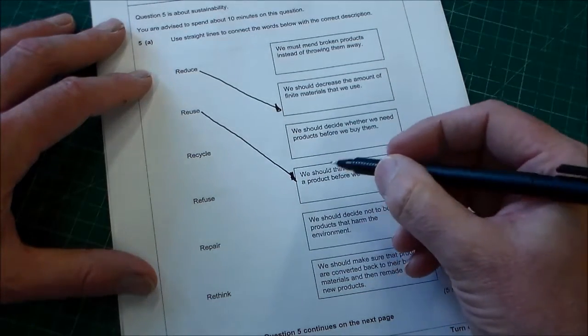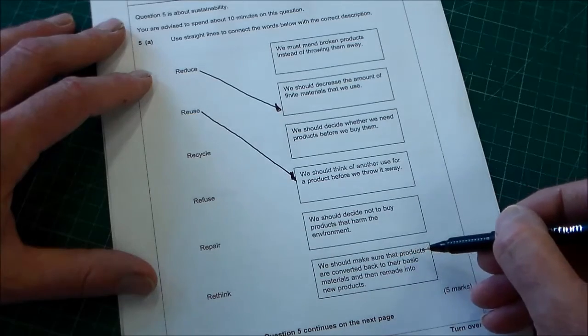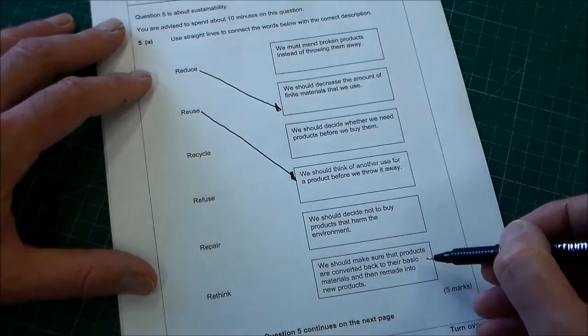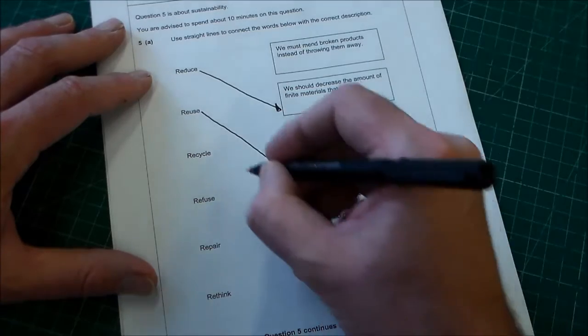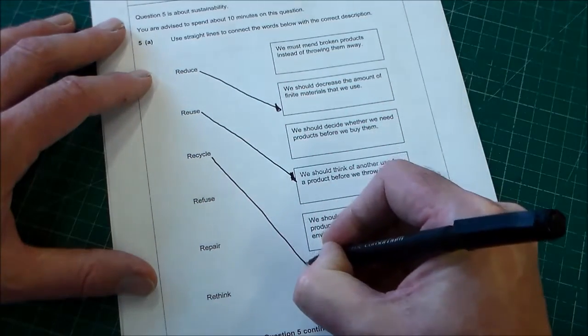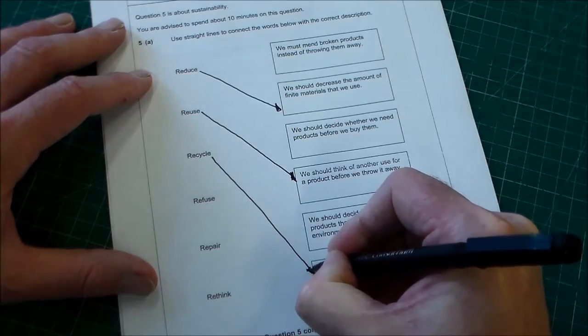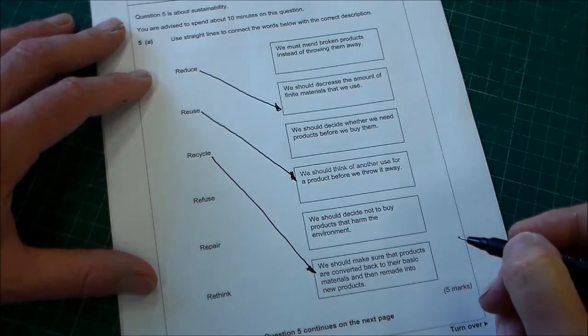The next one is recycle and recycle is we should make sure that products are converted back into basic materials and then remade into products. So remaking into products is recycle. Just make sure these lines are clear and that they touch the box that you're going to.